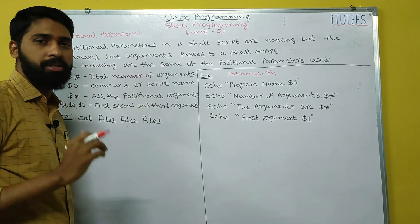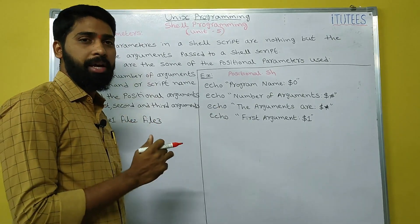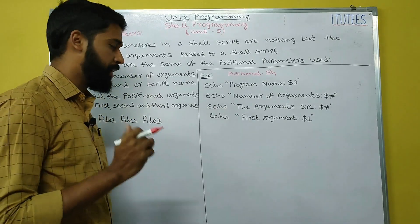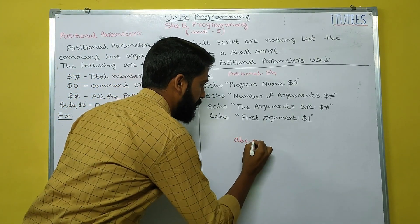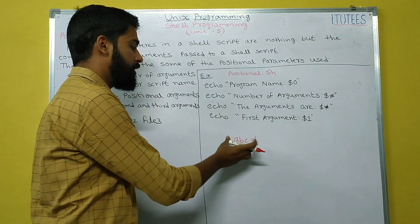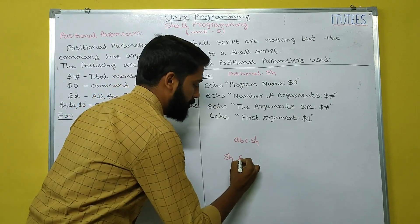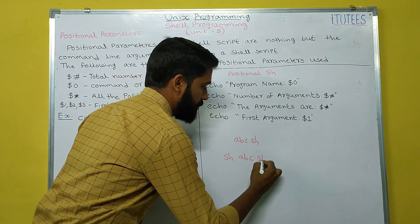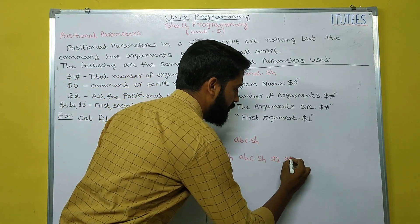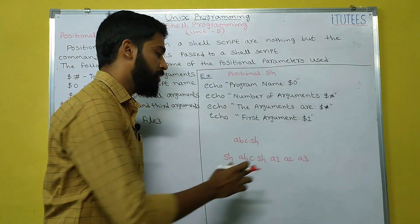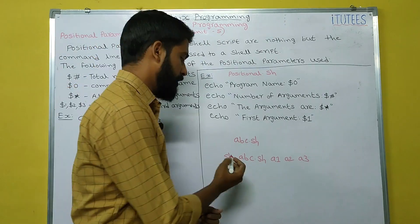So, what is a command line argument? In our previous class, we saw the execution of a shell script. For example, my shell script name is abc.sh. How I can execute this abc.sh script? sh space, I give the program name abc.sh. After that, if I give any arguments, a1, a2, a3 — these arguments are called command line arguments.